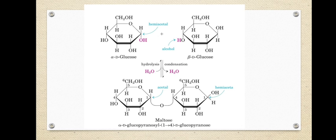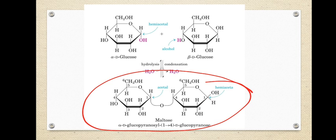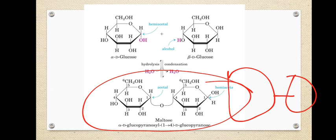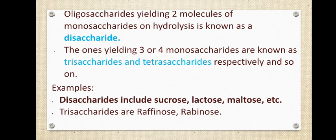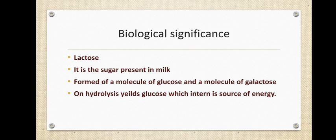On the screen you can see a structure with two sugar units — glucose and glucose. Since there are two sugar units, this is a disaccharide. If you add one more unit it becomes a trisaccharide, and one more after that it becomes a tetrasaccharide. Now let's see the examples one by one along with their biological significance.